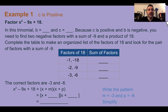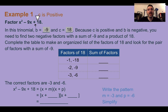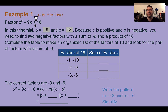Example 1, c is positive. Factor x squared minus 9x plus 18. It's important to identify a, b, and c. Here b equals negative 9 and c equals 18. The sign of the last number tells us whether the integers will be both positive, both negative, or one of each. Since c is positive, both signs must be the same. Since b is negative and the signs must be the same, both integers must be negative.